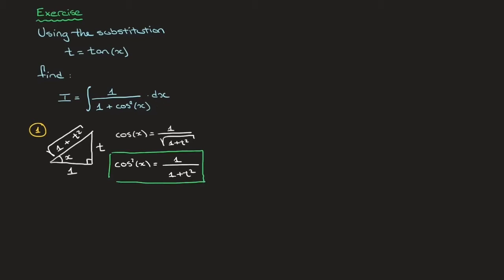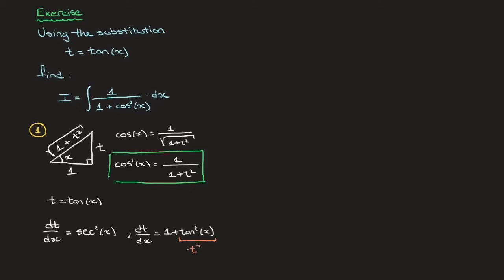Now we need to rewrite dx in terms of t. Using the fact that t equals tan of x, its derivative dt/dx equals either sec squared of x, or equivalently 1 plus tan squared of x. Since tan of x equals t, the expression 1 plus tan squared of x is just 1 plus t², so dt/dx equals 1 plus t², and rearranging gives dx equals dt over 1 plus t squared.